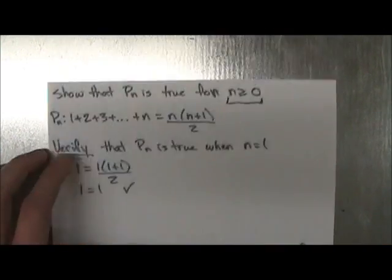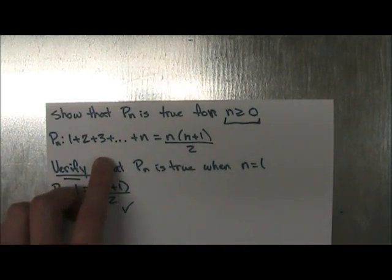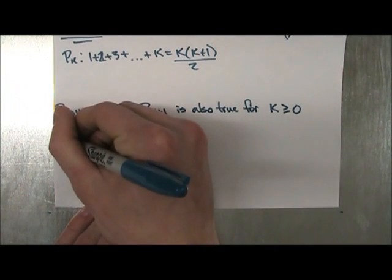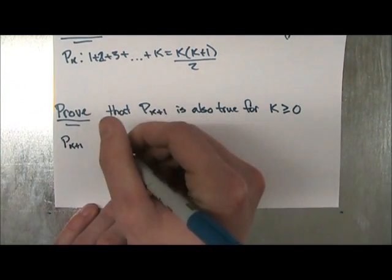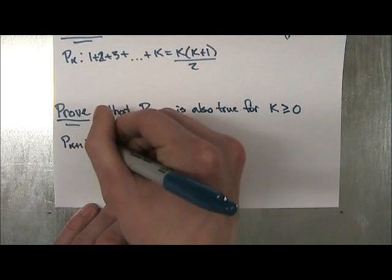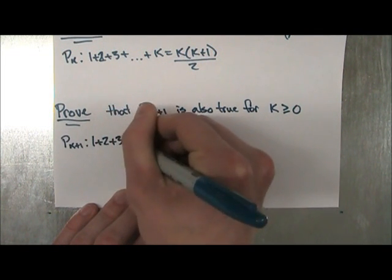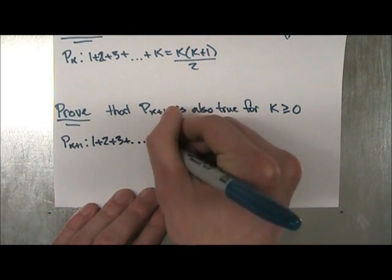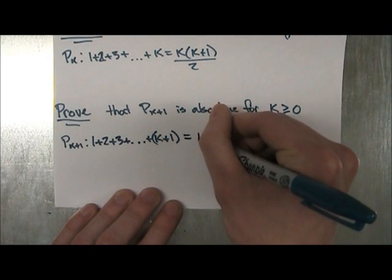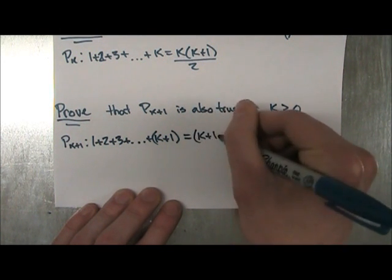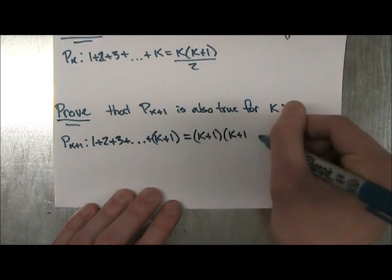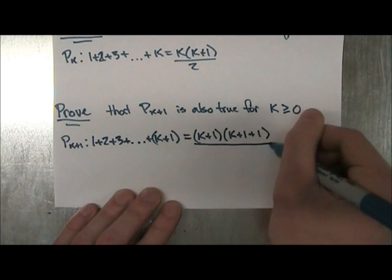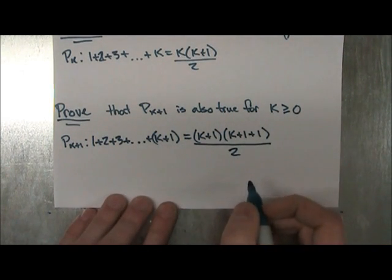So it's going to be the same thing, you're just going to replace the n in your Pn here with k plus 1. So your Pk plus 1 is going to be 1 plus 2 plus 3 plus dot dot dot plus k plus 1 equals k plus 1 times k plus 1 plus 1, remember there's the plus 1 there, divided by 2.